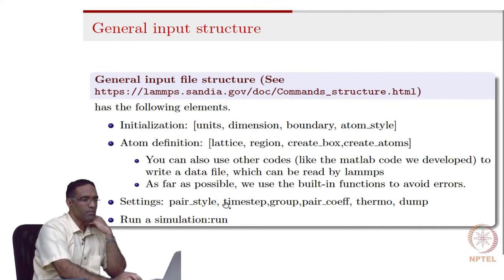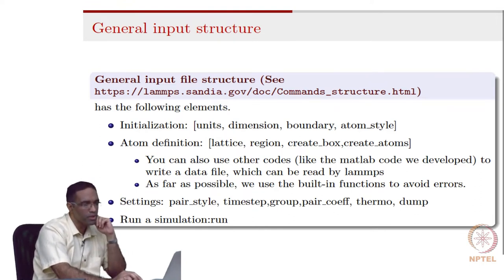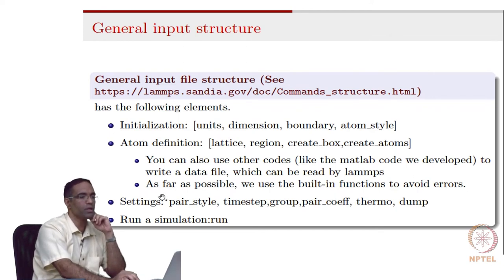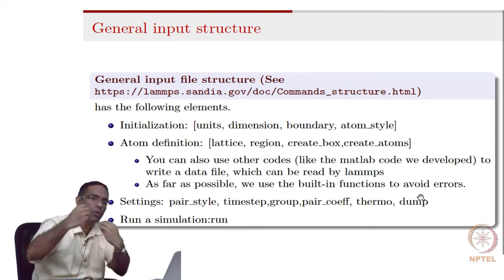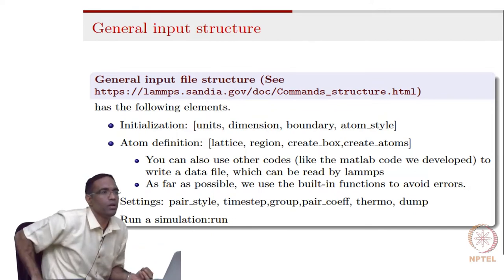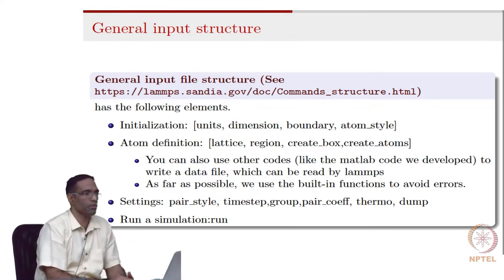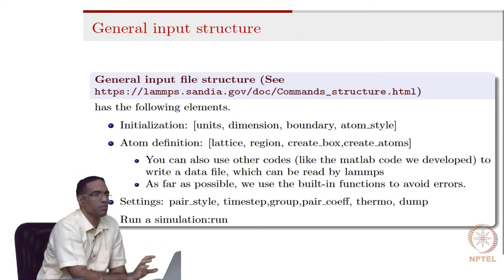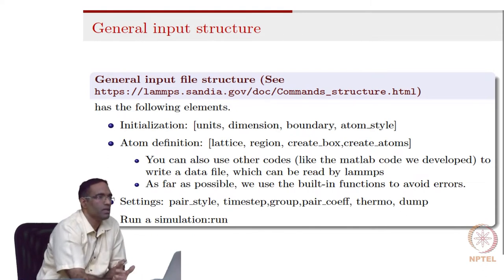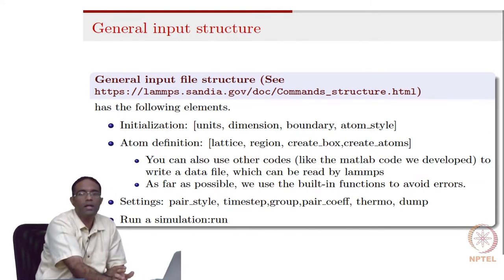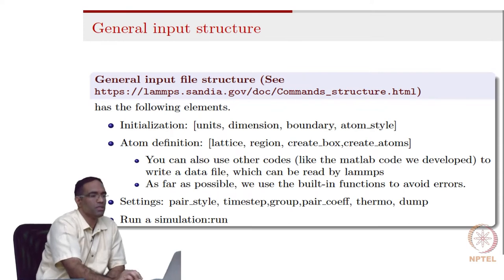Pair style, time step, group, and pair coefficients - the coefficients of the interatomic potential - will basically perform certain settings and help you run specific kinds of simulations. Dump, for example, is a command that will help you dump out information such as the positions and velocities of all the atoms. All these things may seem abstract to someone who has never written an input script for LAMMPS, but this is just an introduction - we are going to see many of these in good detail.